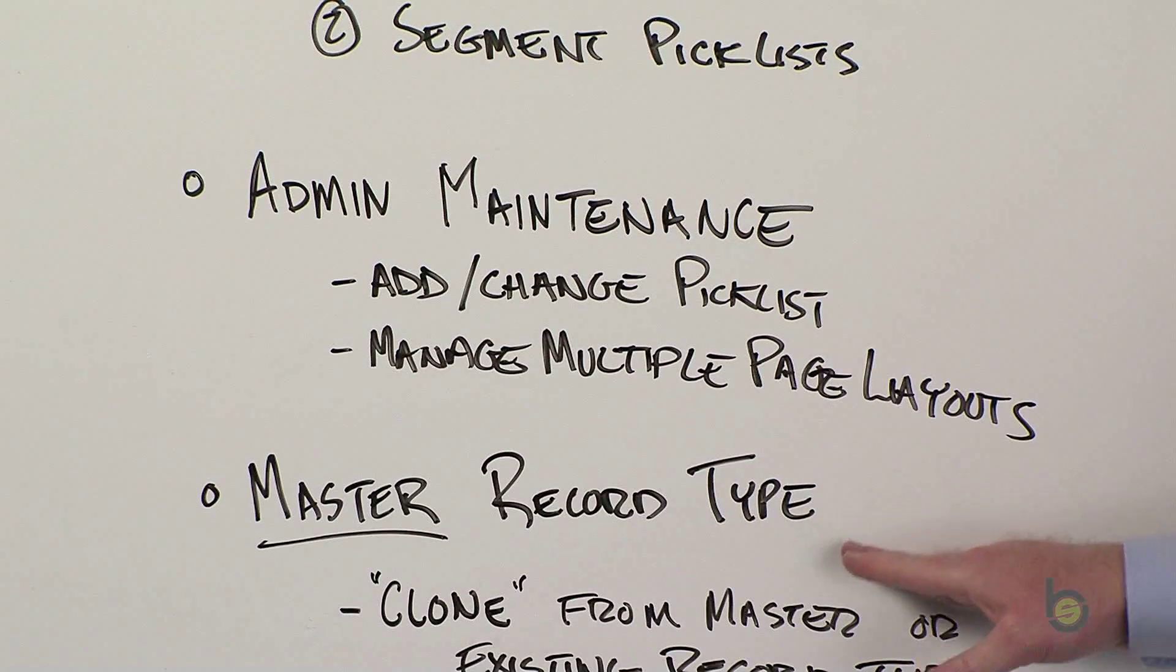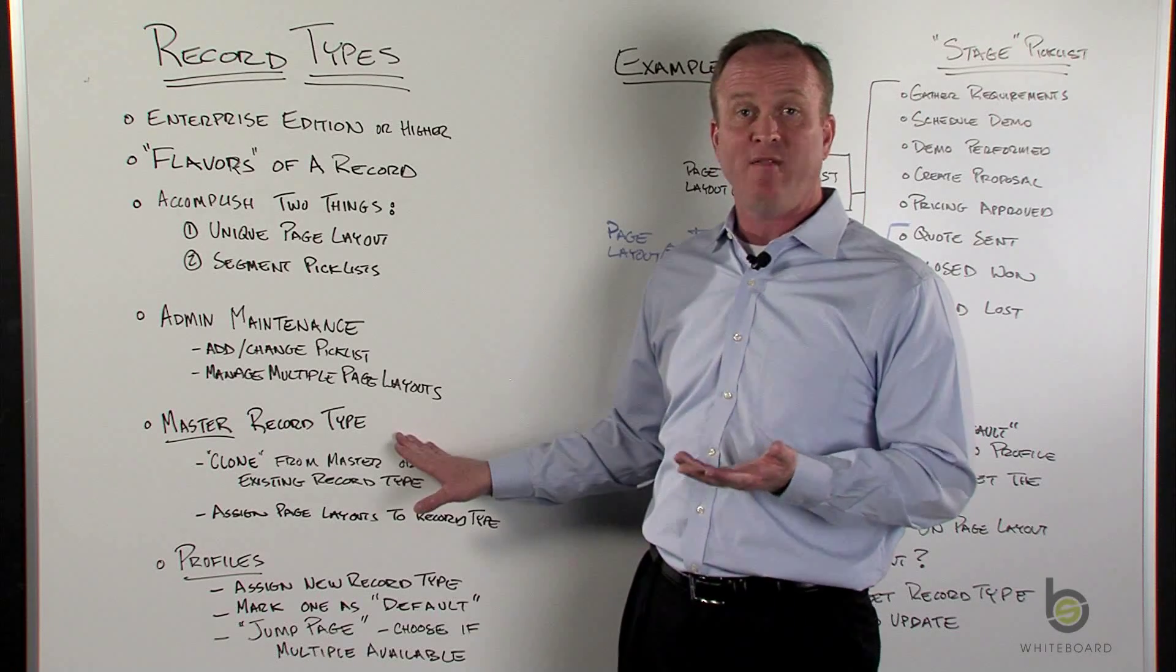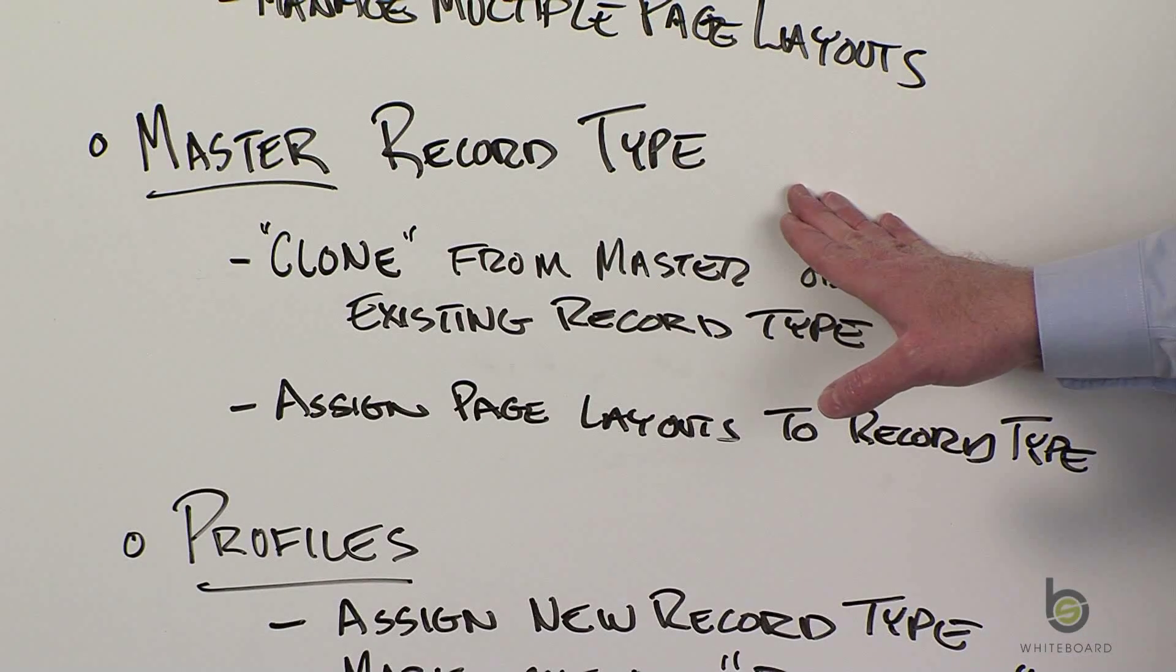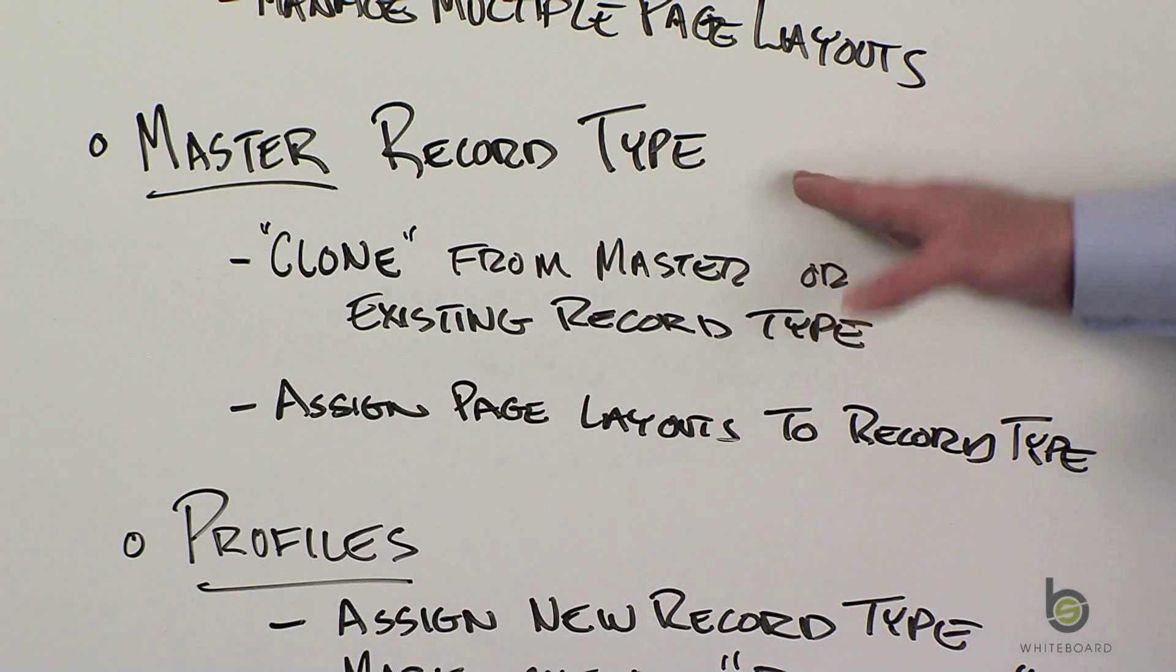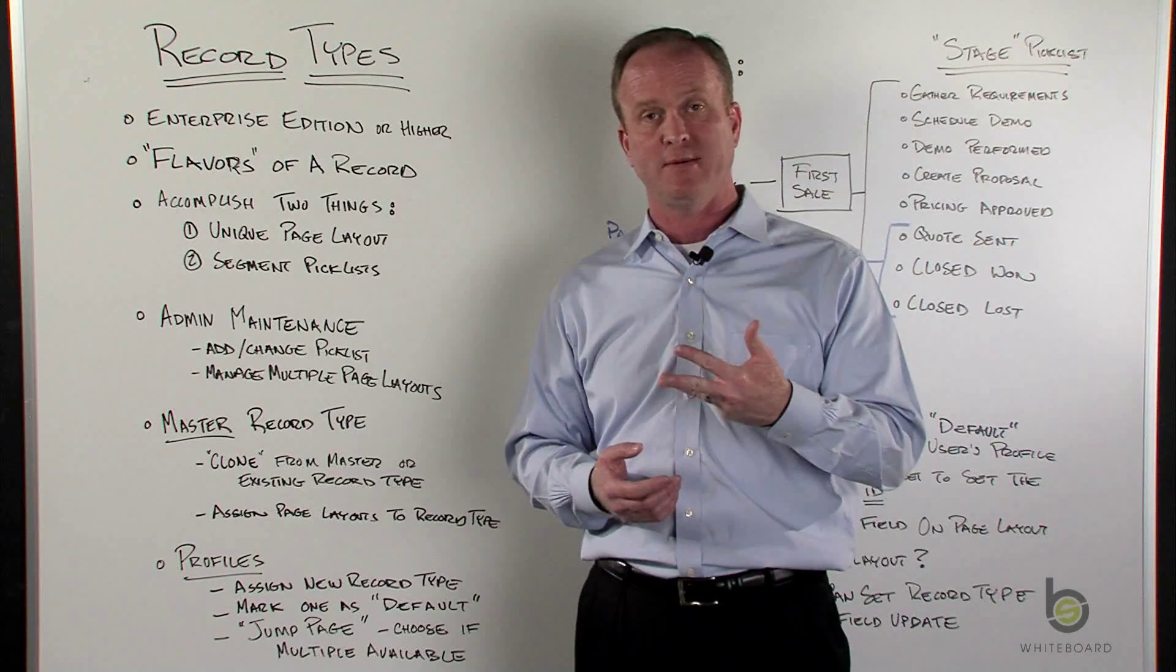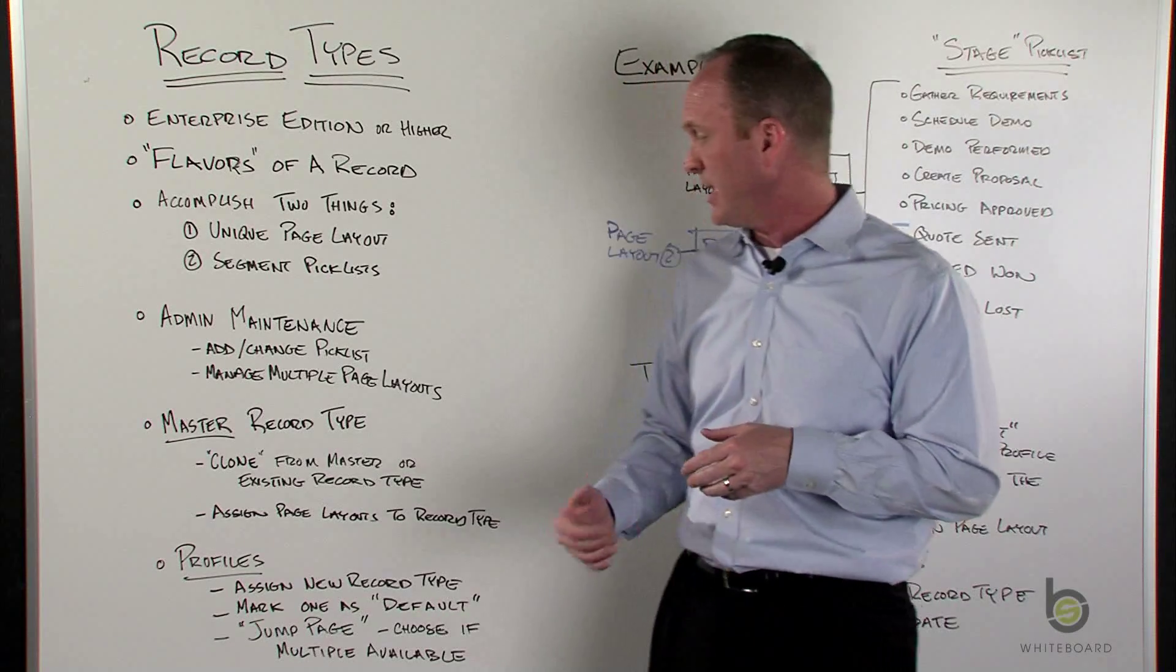So you probably didn't realize it, but for every object, you have a master record type. It's not until you start creating new record types that you realize it's available. So when you start a new record type, you can clone from the master, and if you have existing record types available, you can clone from an existing record type.